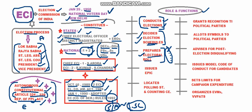ECI issues EPIC — Electors Photo Identity Cards — which were introduced from 1993 to avoid electoral fraud, ensuring one voter can vote only once. These cards were made mandatory from the year 2004, since when EPIC has been required for any voter to cast their vote.